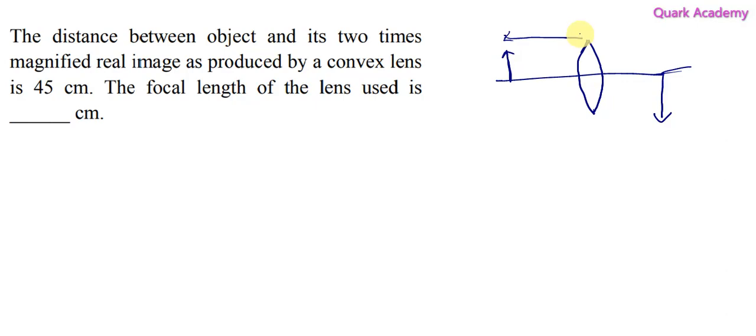Let's consider the object distance and image distance. This is object distance u and this is image distance v. Now, magnification is 2. I'm just taking the magnitude only, like values only. Of course, it should be negative 2 because it's an inverted image, but I'm just considering this to see how u and v are related. So this we can calculate by using v by u, that is 2. So I can say that v equals twice of u.